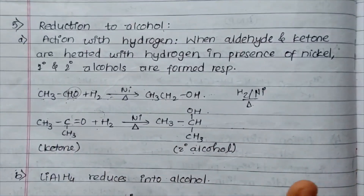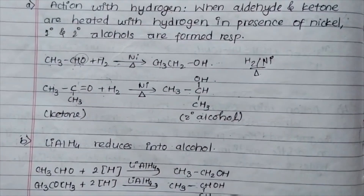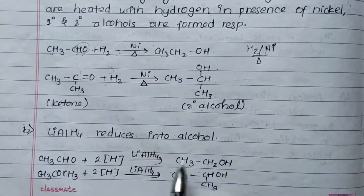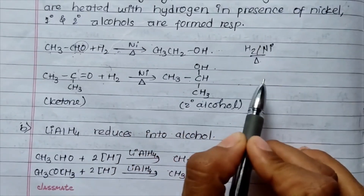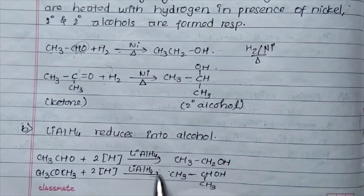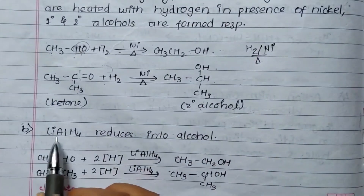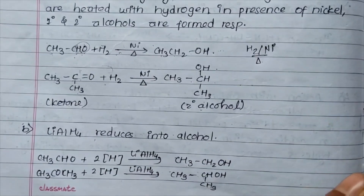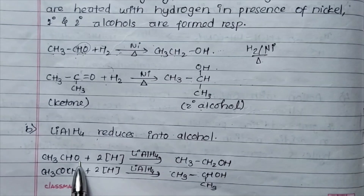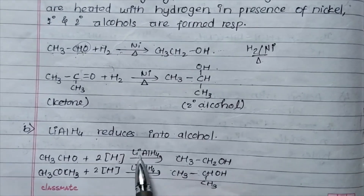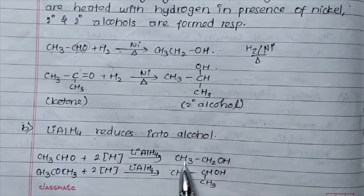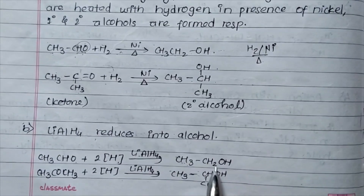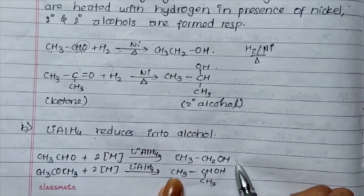Conversion is important. The reduction is reduced to alcohol. LiAlH4 is reduced to alcohol. This is LiAlH4: CH3CHO plus LiAlH4 gives CH3CH2OH. This is primary alcohol.